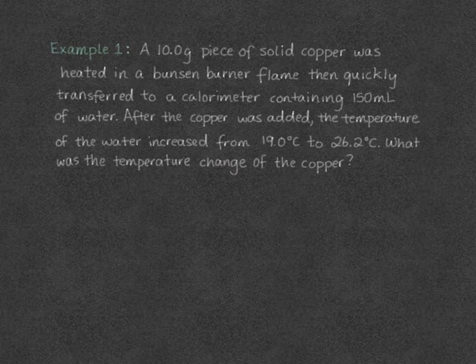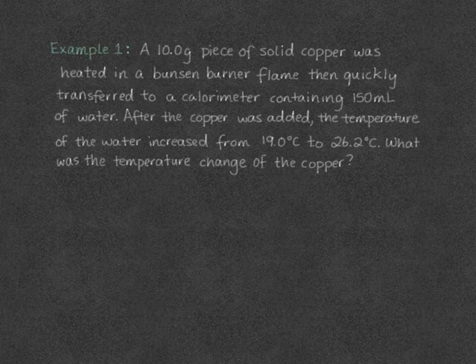So our first example: a 10 gram piece of solid copper was heated in a Bunsen burner flame and then quickly transferred to a calorimeter containing 150 milliliters of water. After the copper was added, the temperature of the water increased from 19 degrees Celsius to 26.2 degrees Celsius. What was the temperature change of the copper?